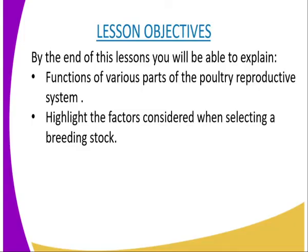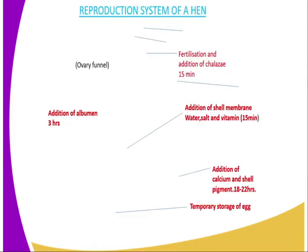The lesson objectives: by the end of this lesson you should be able to explain, number one, the functions of various parts of the poultry reproductive system, and number two, highlight the factors considered when selecting a breeding stock. We now look at the reproductive system of a poultry — an example being a hen.